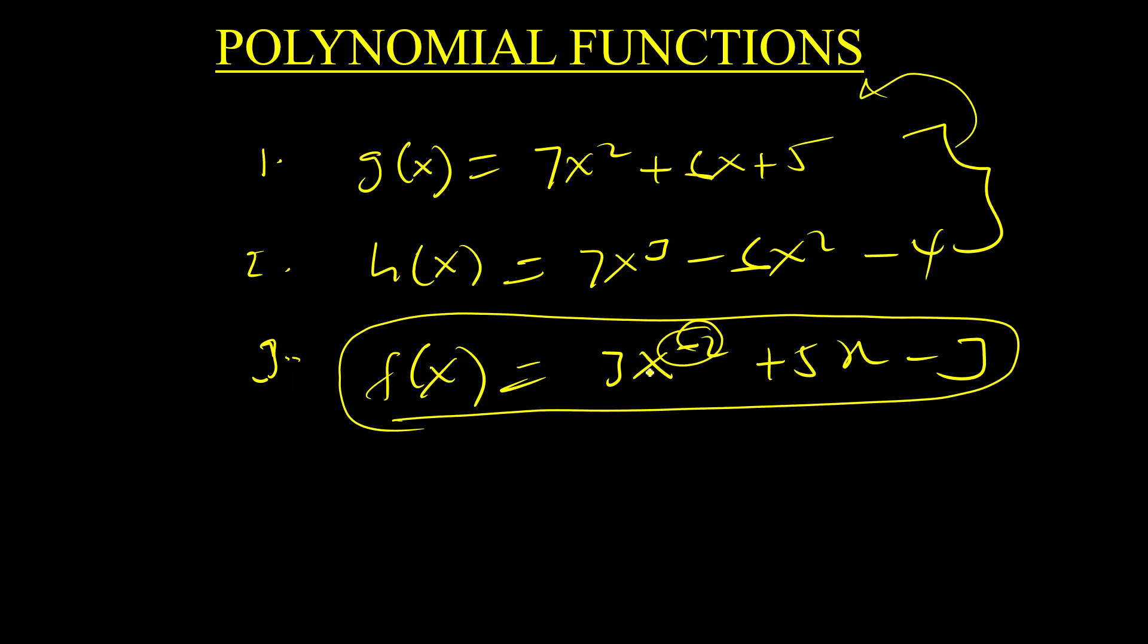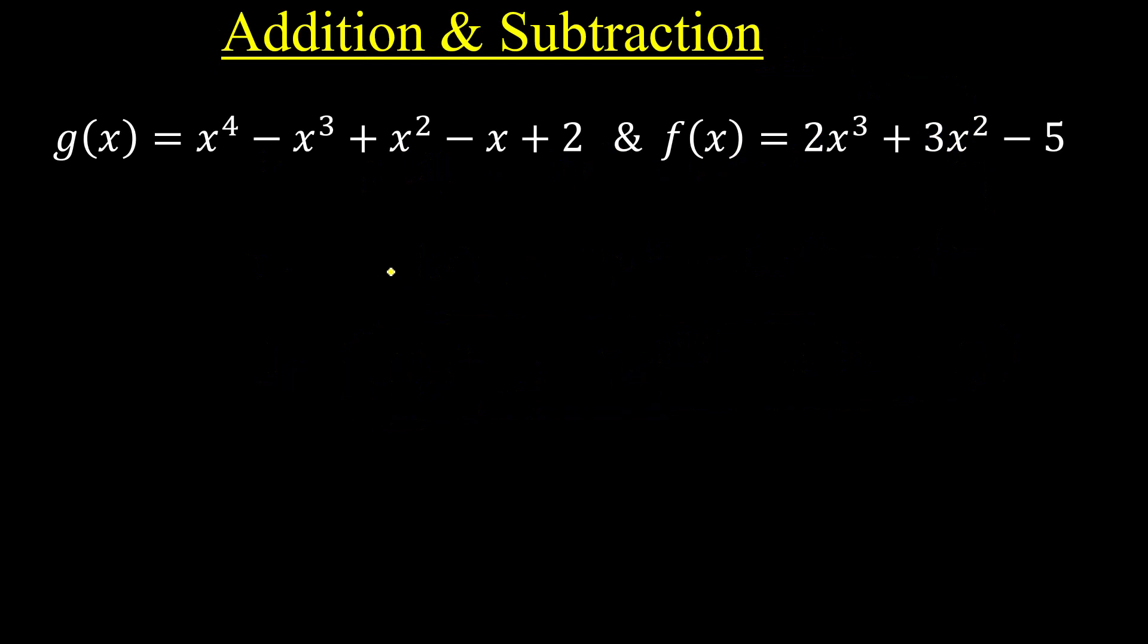Let's look at how to add polynomial functions. Given g(x) = x⁴ - x³ + x² - x + 2 and f(x) = 2x³ + 3x² - 5, find g(x) + f(x). For addition, we group like terms straight away.